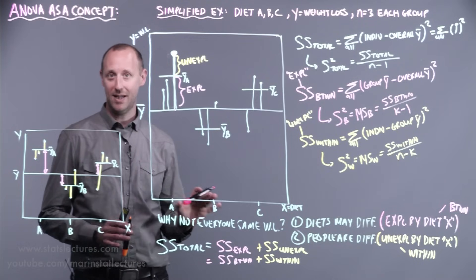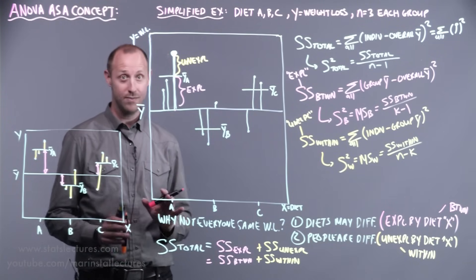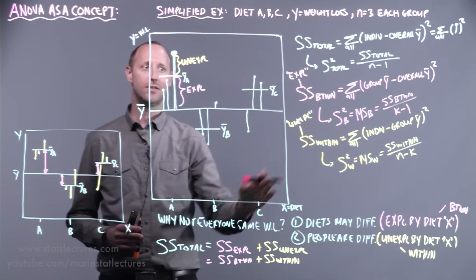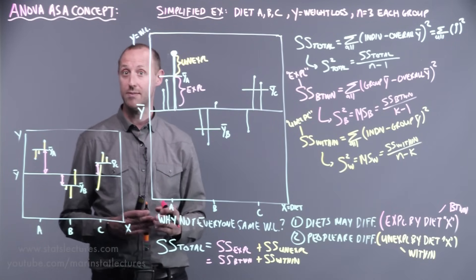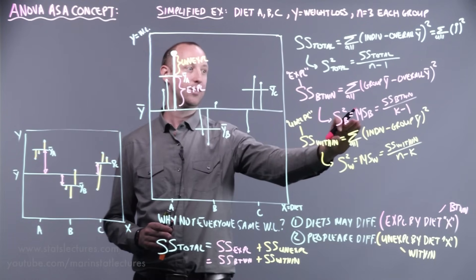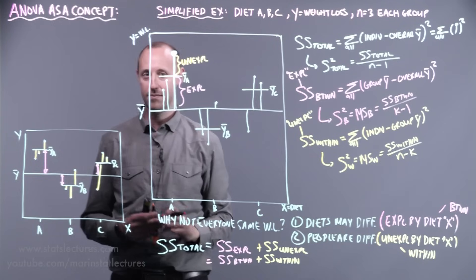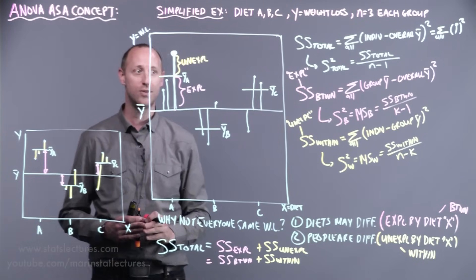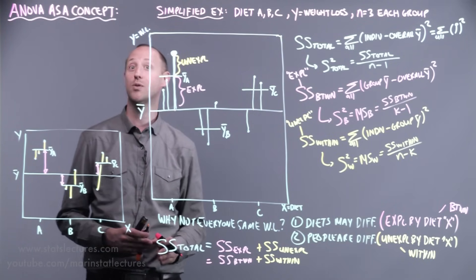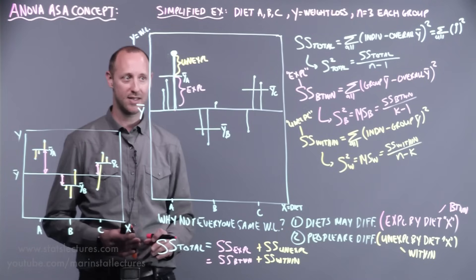There are many names used for these concepts across different sources. The sum of squares between groups is also called the explained sum of squares, sum of squares model, sum of squares treatment, or sum of squares regression. Similarly, mean square between, explained mean square, mean square model, treatment, or regression are used. The sum of squares within is also called sum of squares unexplained, sum of squares error, or sum of squares residual. Lots of different names for the exact same concept.